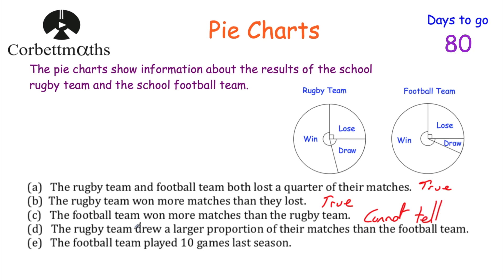The next statement says the rugby team drew a larger proportion of their matches than the football team. Looking at the rugby team, they drew just under a quarter of their matches, whereas the football team didn't draw many of their matches at all. So actually the rugby team did draw a larger proportion — they may not have drawn more matches, but they have a larger sector for draw. So that's true.